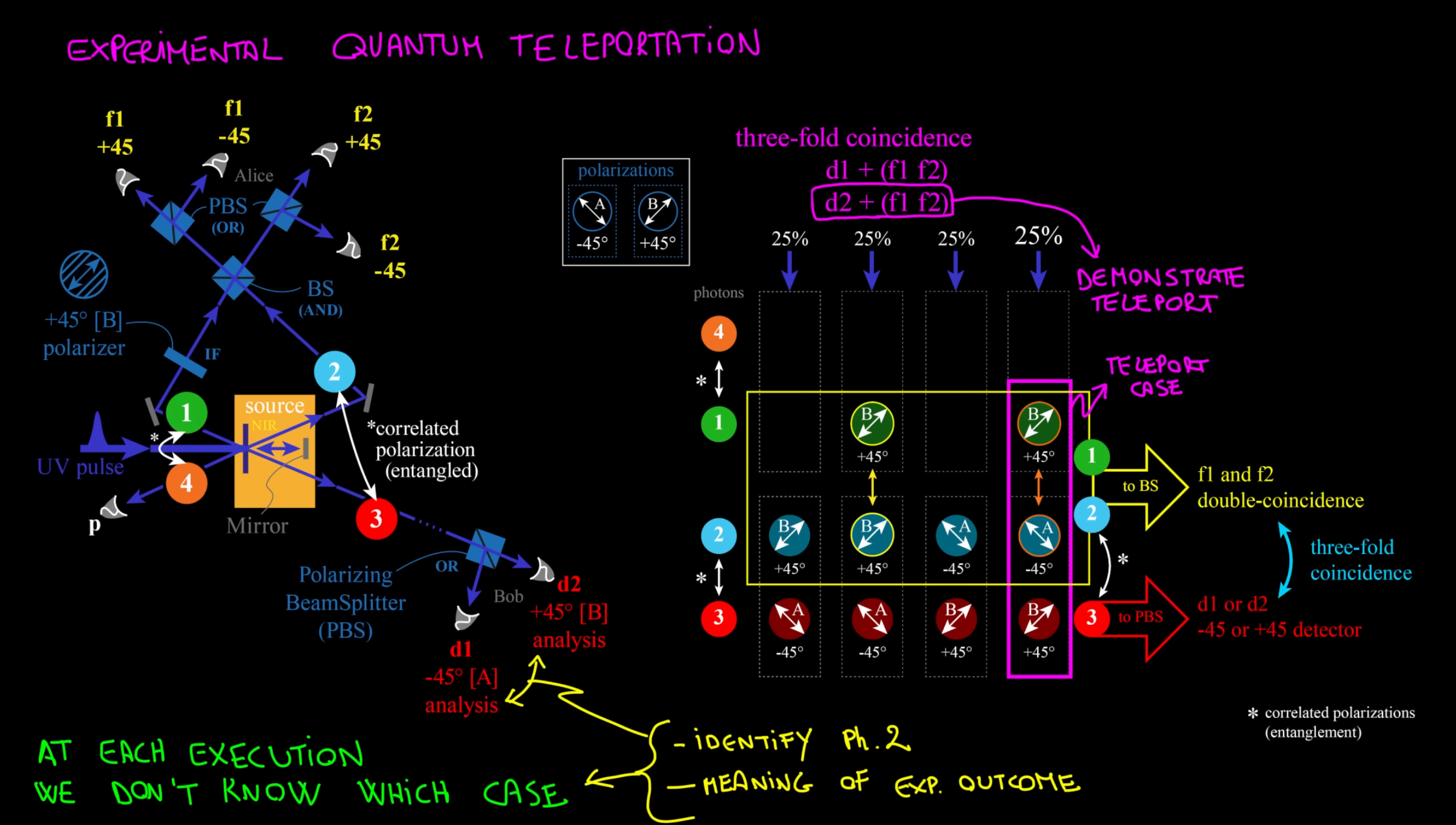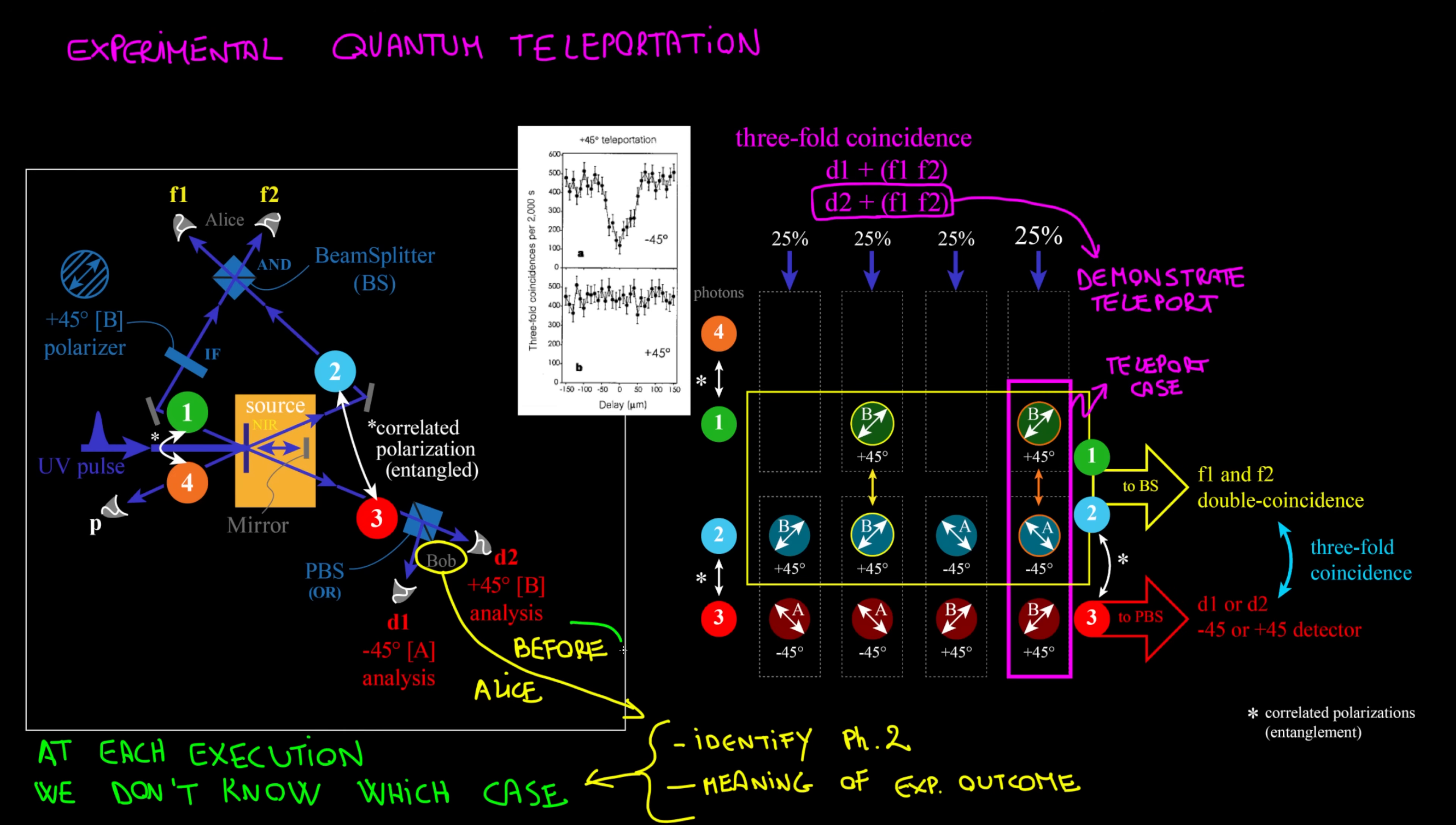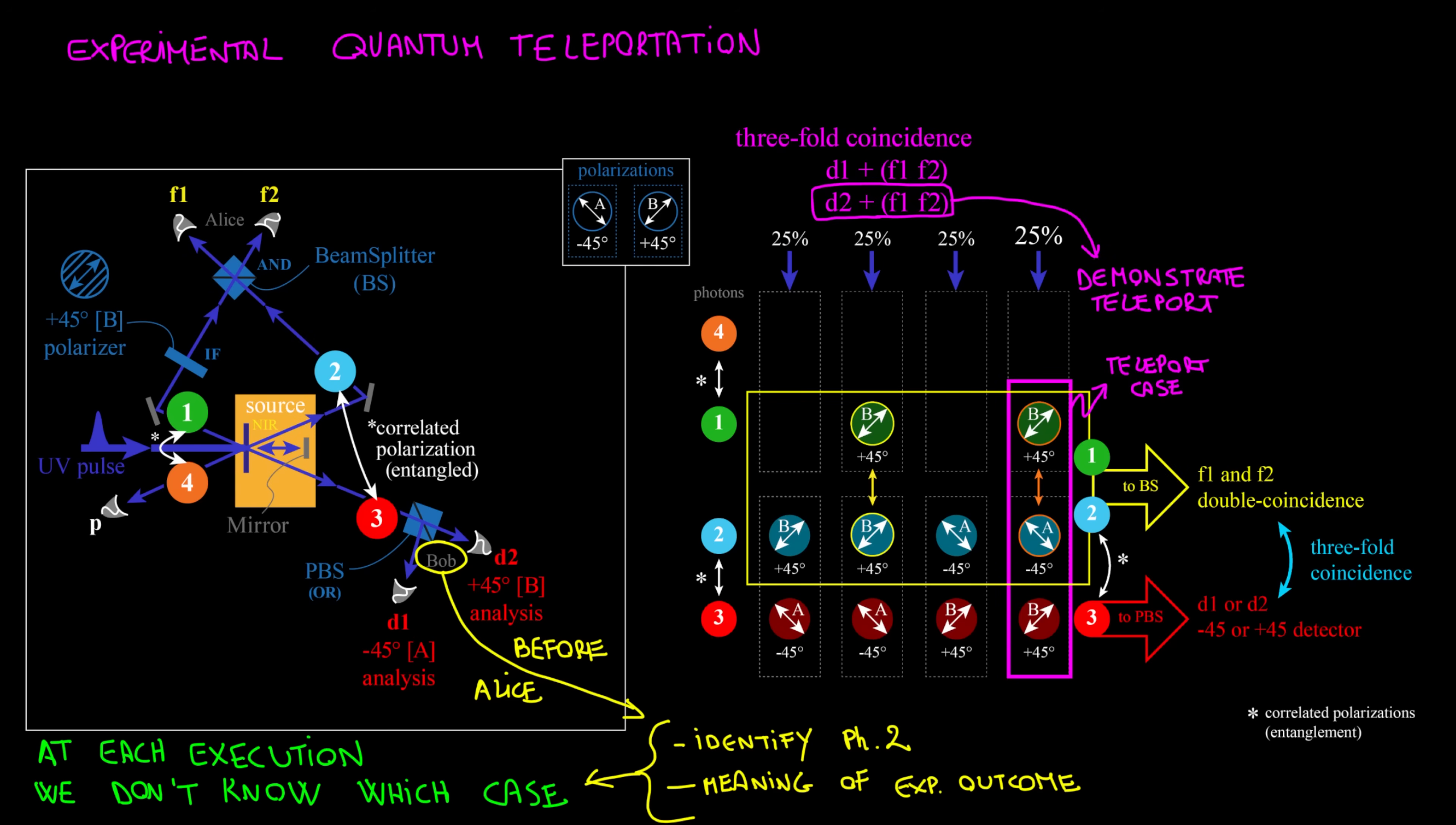Another way to verify that teleport has nothing to do with the results is to detect photon 3 before Alice thanks to a shorter path. Adjusting for time delay, we still have the same threefold coincidences of the paper, despite teleport of B state is now impossible. So we detect threefold coincidences with photon 3 at plus 45, but it is not teleported. There is no evidence about photons changing polarization, and lack of proof is not proof.